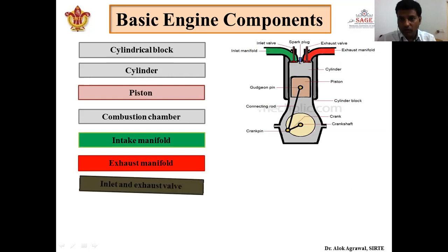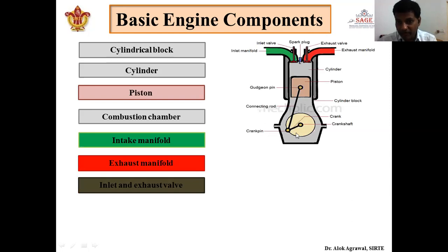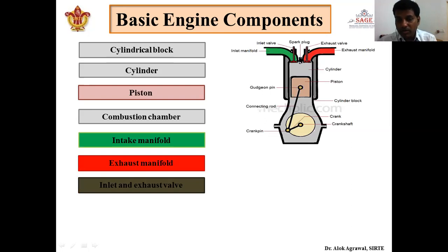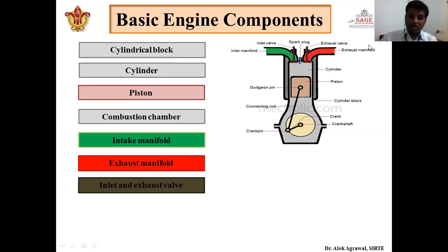Next are the inlet and exhaust valves. This one is the inlet valve and this is the exhaust valve. Their function is to operate with the help of the crankshaft. The inlet valve opens when the air-fuel mixture is required and closes when it is not. The exhaust valve opens when we have to exhaust the gases from the cylinder to outside, and is closed the rest of the time. These valves are operated by the crankshaft and control when air or air-fuel mixture enters the cylinder and when combustion products exit.